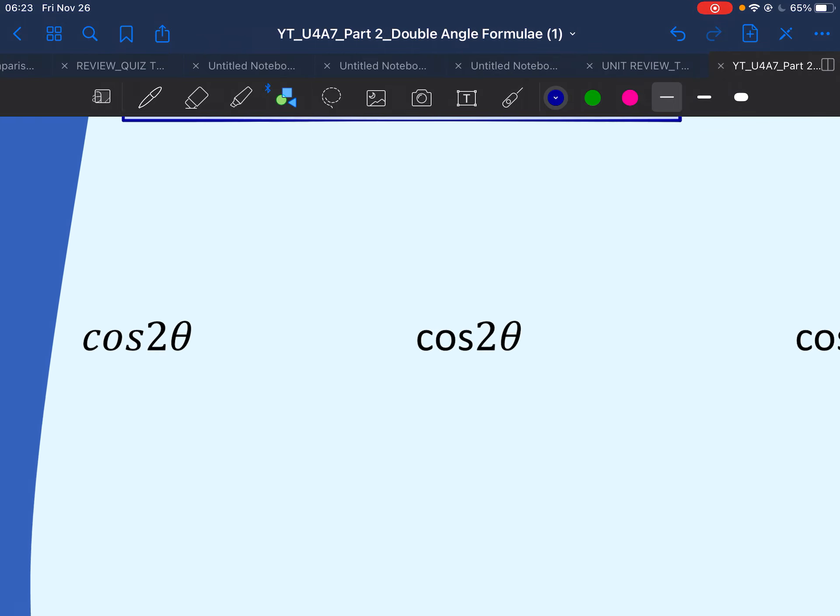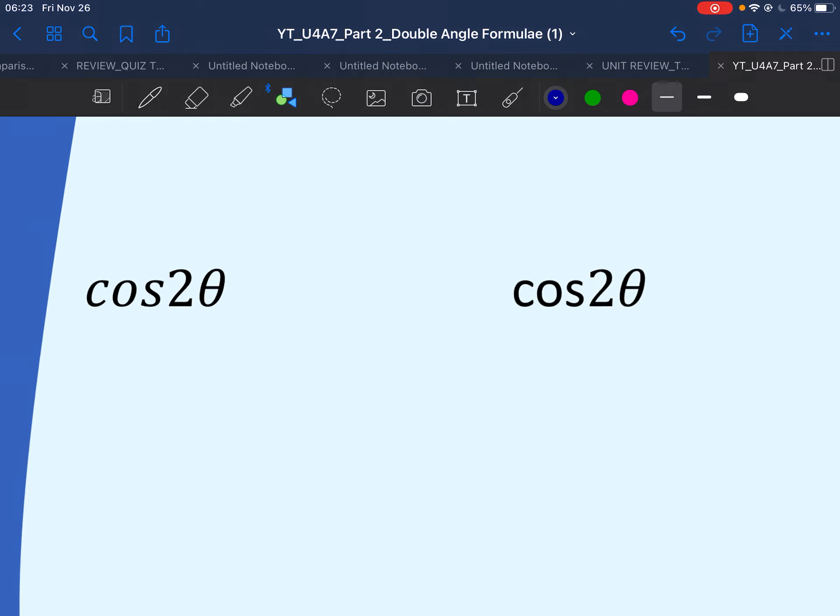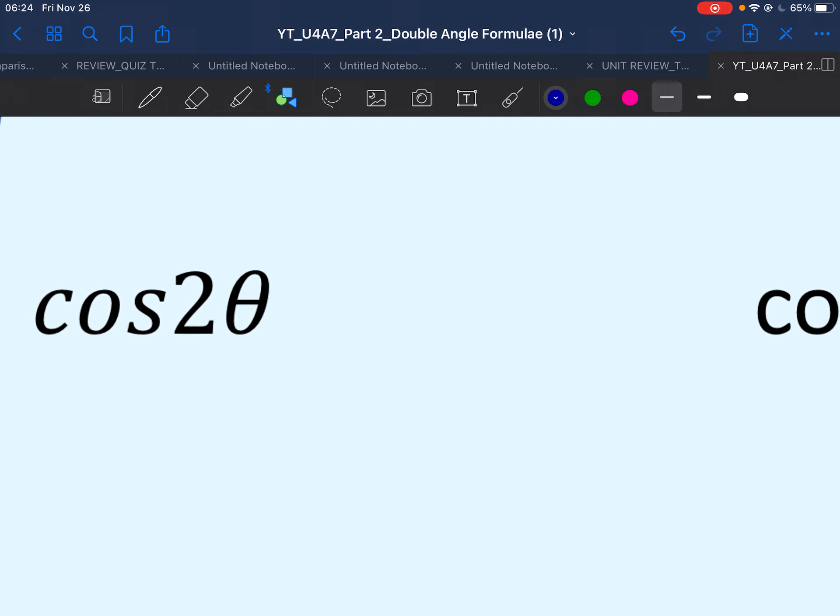Our cos 2 theta will have three different formulas. Nothing to be scared of. If you remember one of them, then you can remember the rest. Similar to how we prove sine 2 theta, we'll write cos 2 theta as cos of theta plus theta.